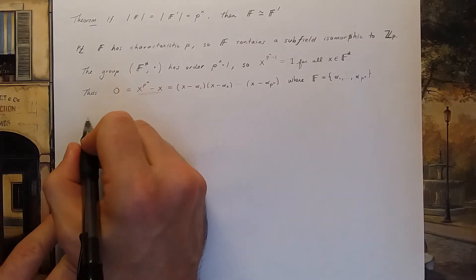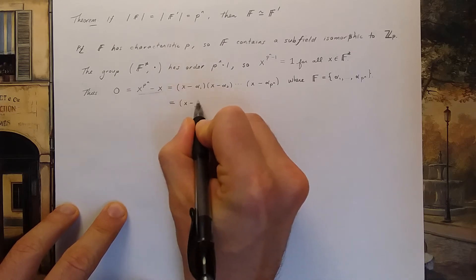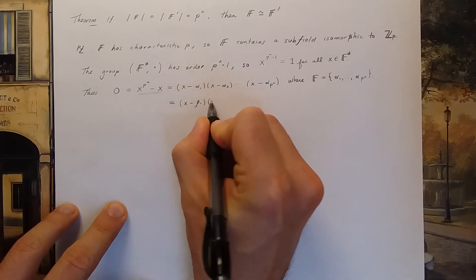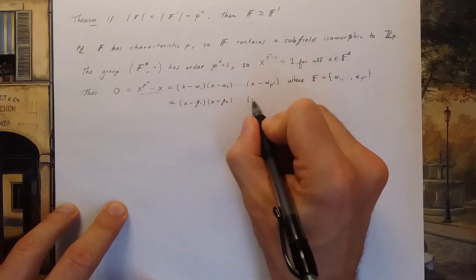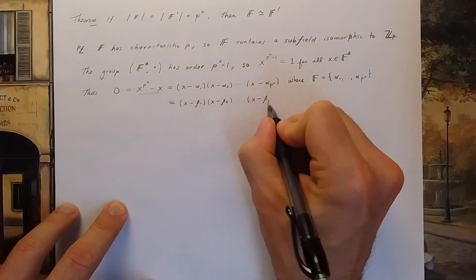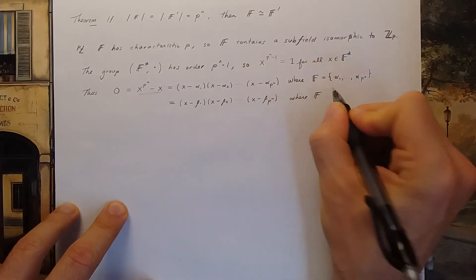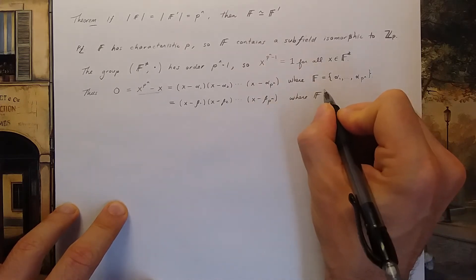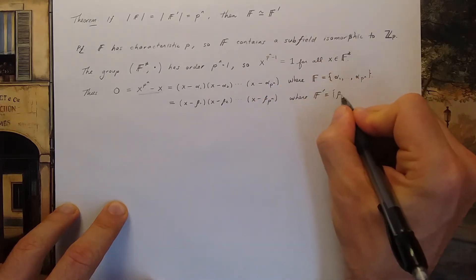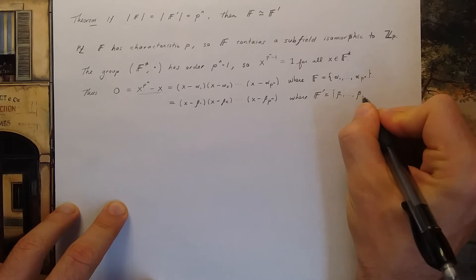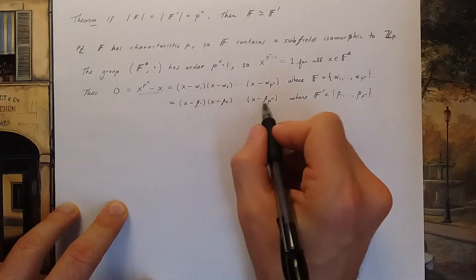So similarly, this is also equal to x minus beta one x minus beta two until I get to x minus beta p n where f prime my second group is beta one through beta p n. So using the same logic on the field F prime I get this expansion.